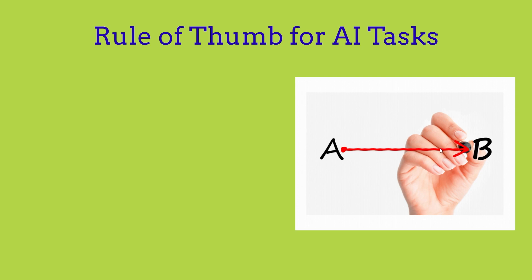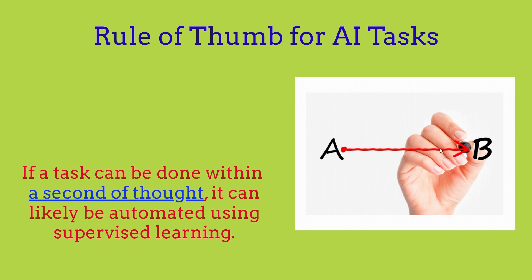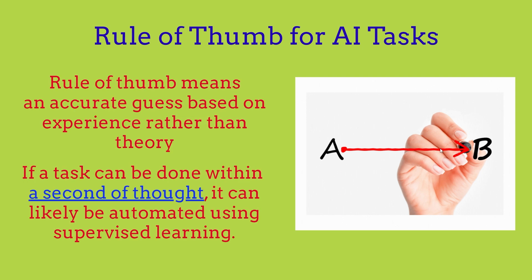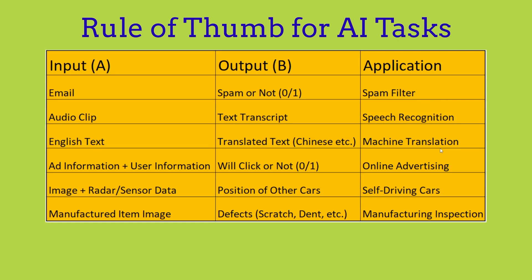The first thing we're going to cover is the rule of thumb for AI tasks. The rule of thumb basically means an accurate guess based on experience rather than theory. The rule of thumb for AI tasks is: if a task can be done within a second of thought, then it can likely be automated using supervised learning. We're going to look at some examples on the next slide.